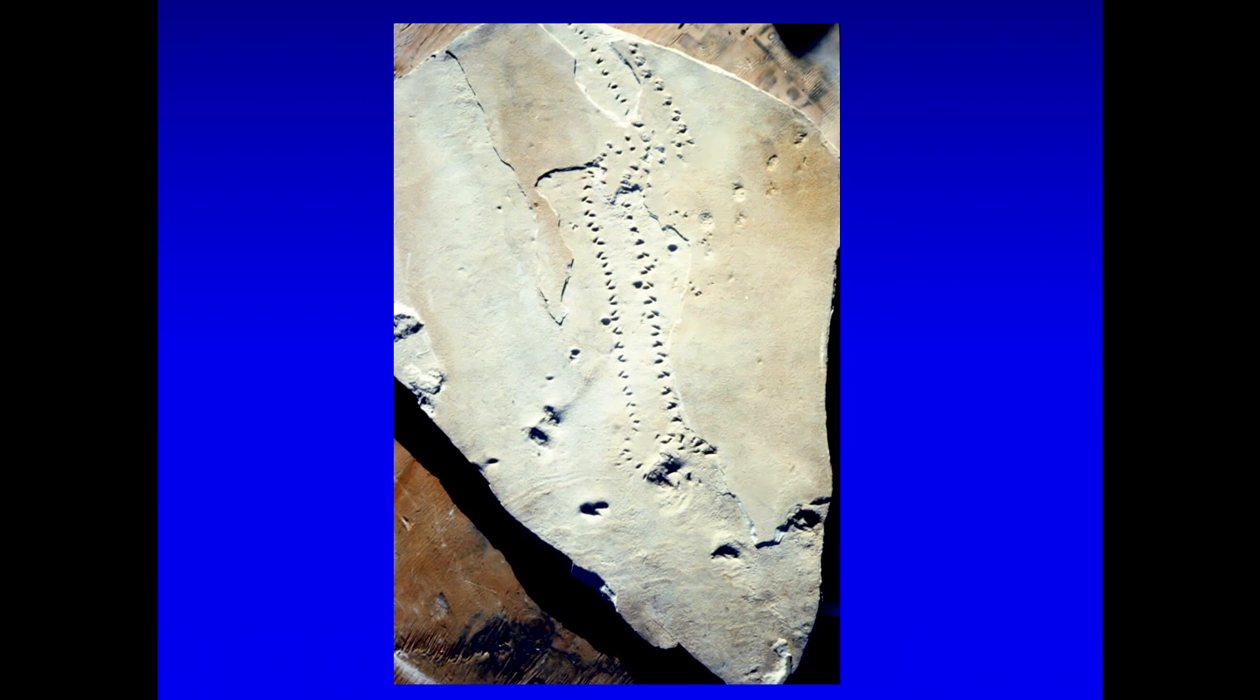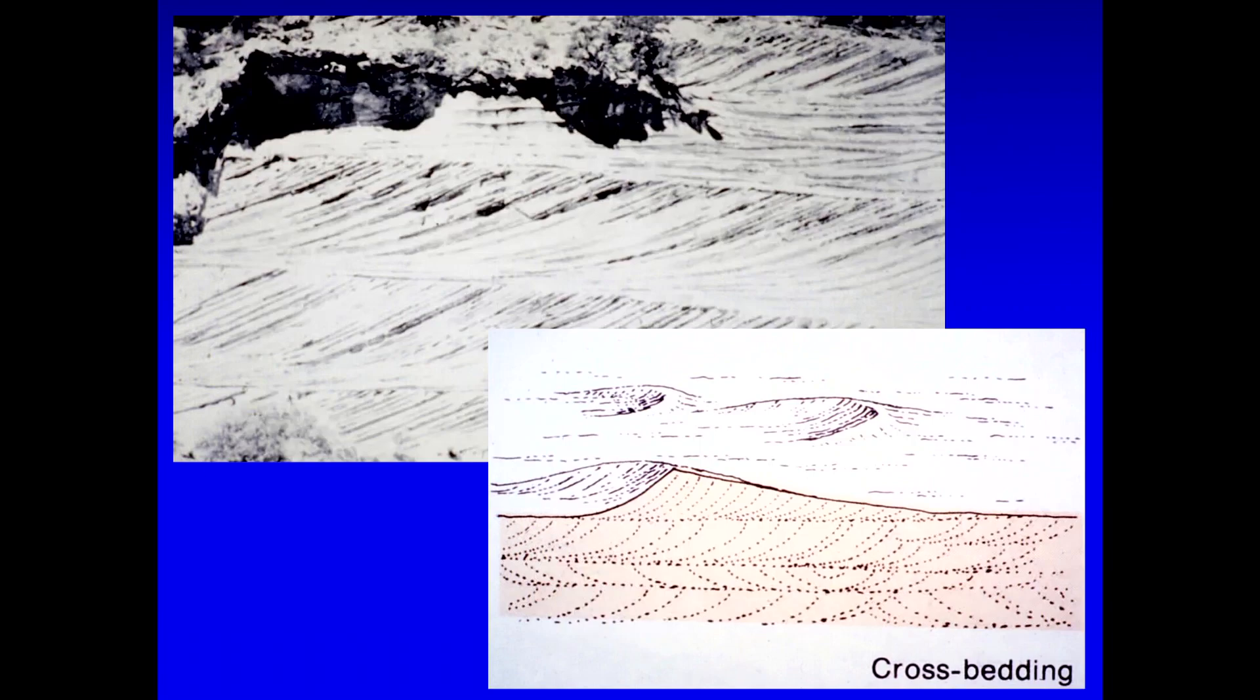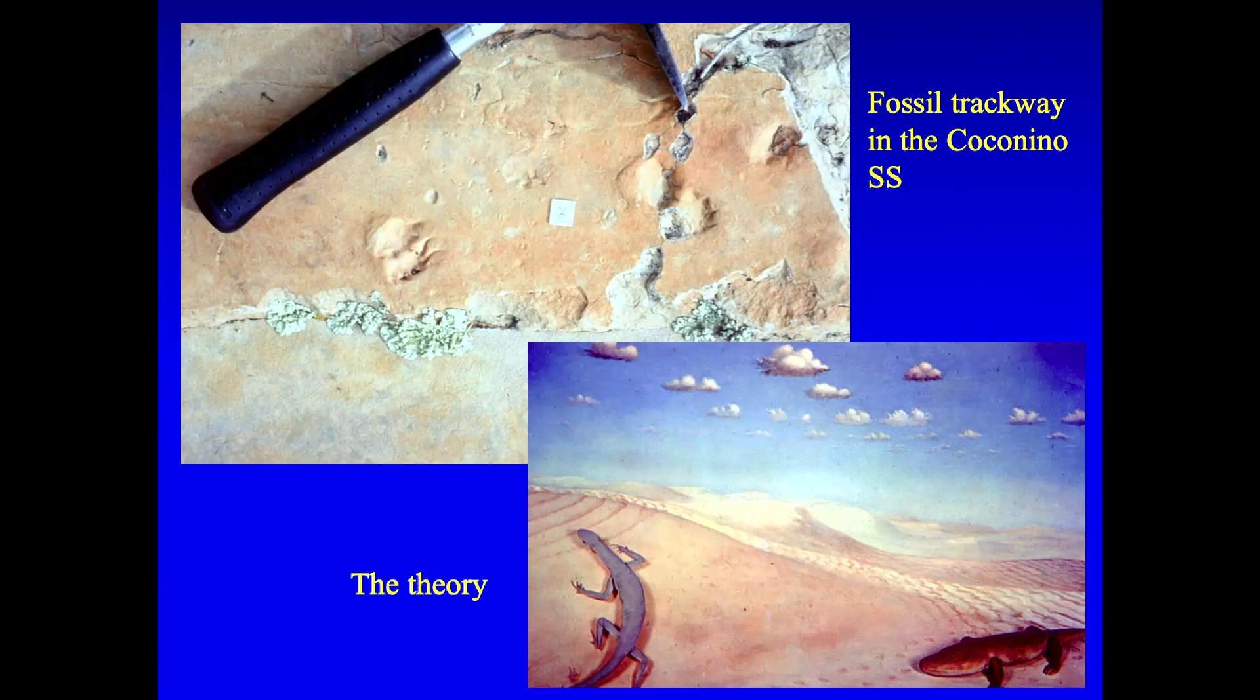So you can tell a lot about behavior from the trackways. All right. So a little more about the sandstone. The top, again, is a picture of this kind of cross-bedded sandstone. And on the bottom shows how it forms. The wind is blowing from the right to the left, and it is making layers on the front of that dune. And that can make this cross-bedded sandstone.